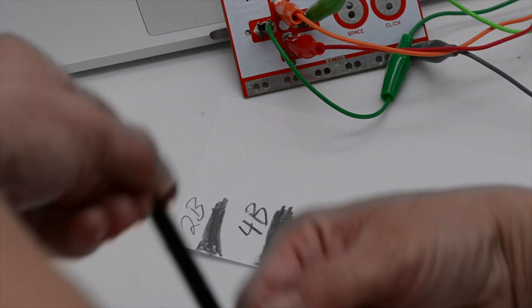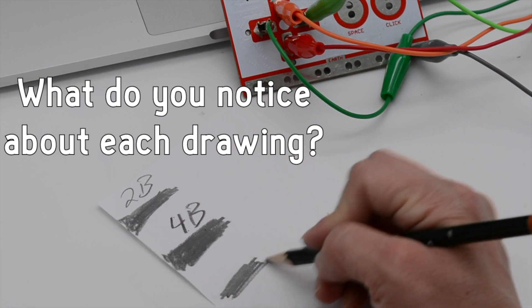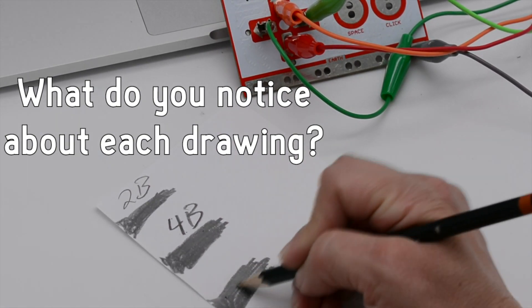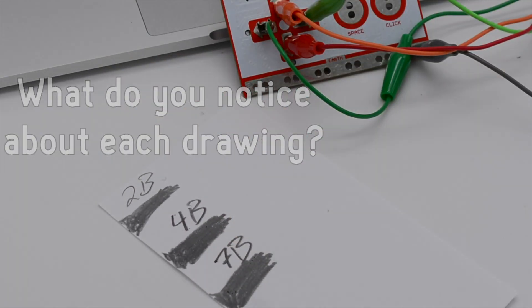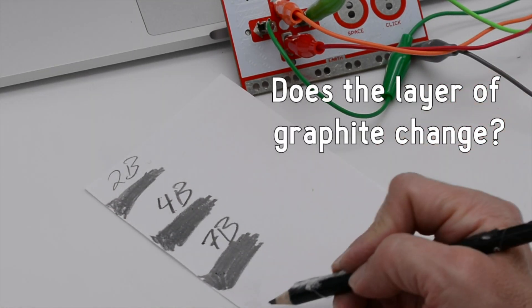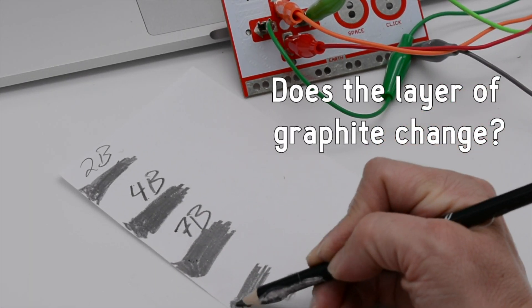So as I draw each one, what do you notice about each drawing? Can you tell if the pencil lead is different? Is the graphite coming on any differently? Does 2B look different than 4B and 7B? What's happening here?